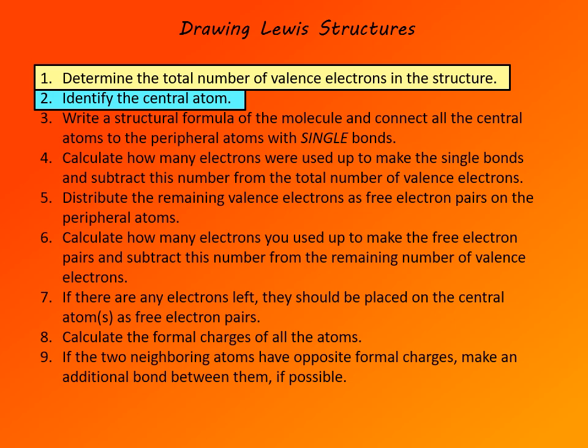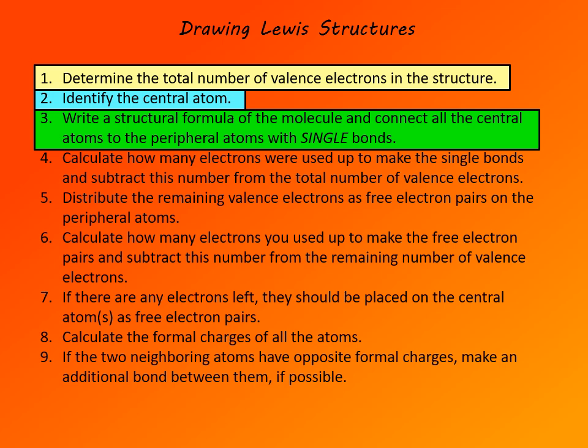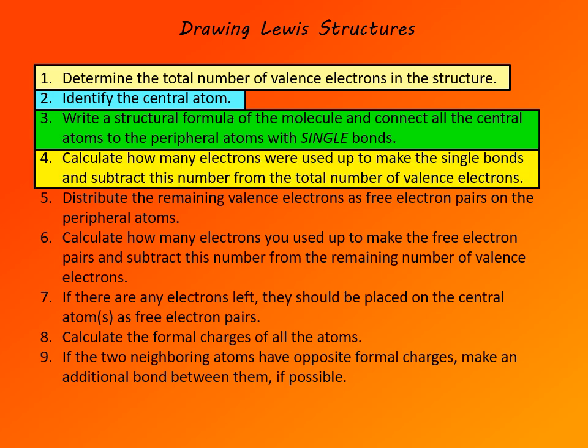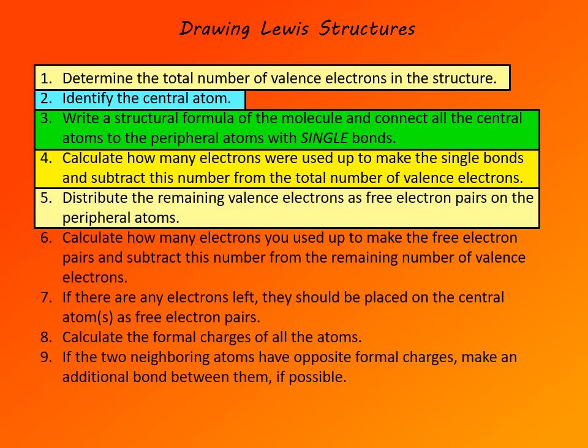Peripheral atoms are attached to central atoms, and hydrogens are usually attached to peripheral atoms — though sometimes hydrogen is attached directly to the central atom, in which case you must be told. Then, in step 3, write a structural formula connecting all central atoms to peripheral atoms with single bonds, and attach hydrogens with single bonds as well. The reason for using single bonds is that any bond must be at least a single bond, so you assume that minimum. In step 4, calculate how many electrons were used to form those single bonds and subtract that from the total number of valence electrons.